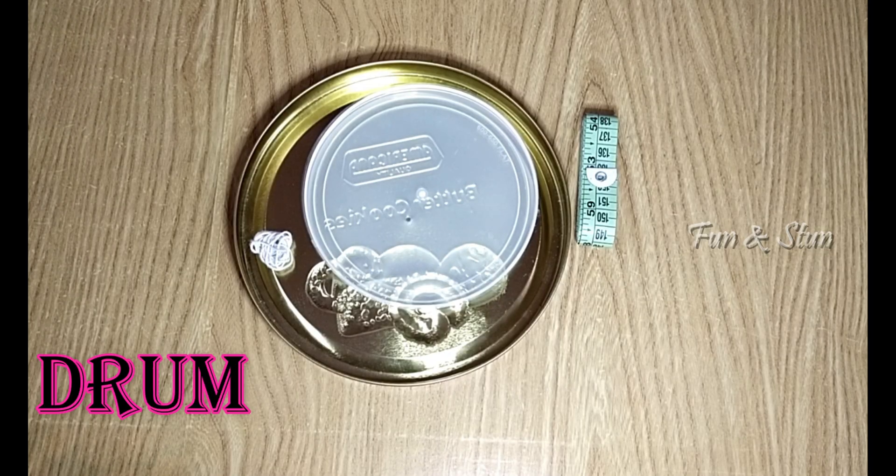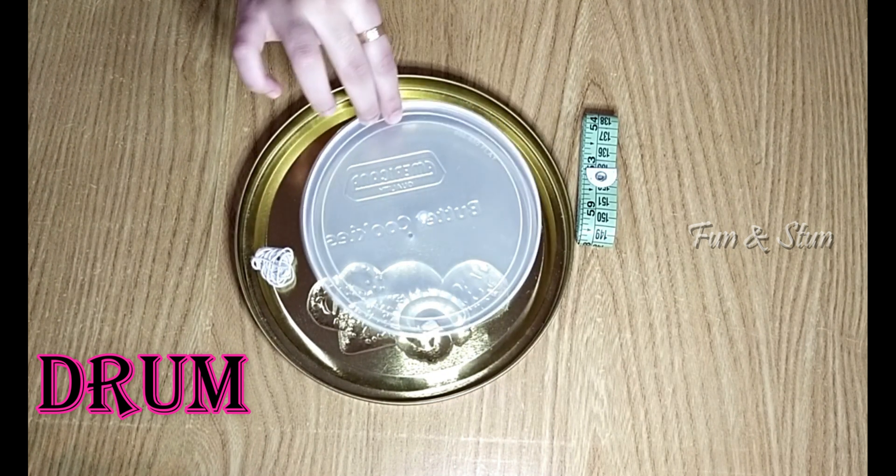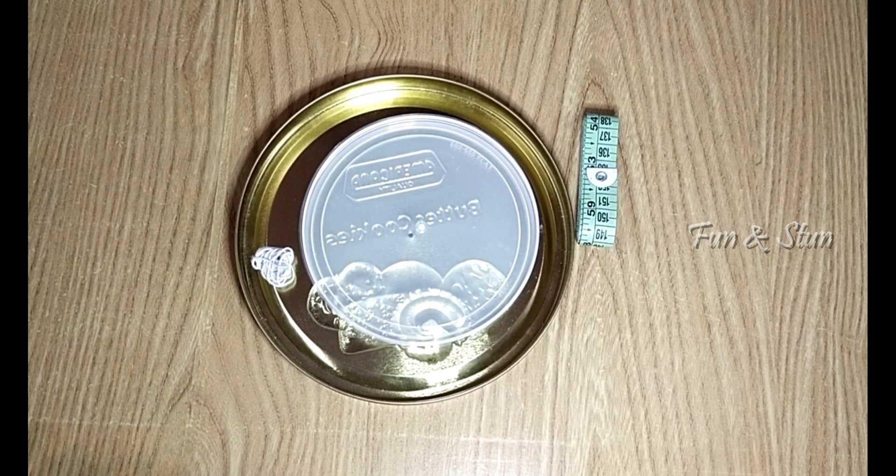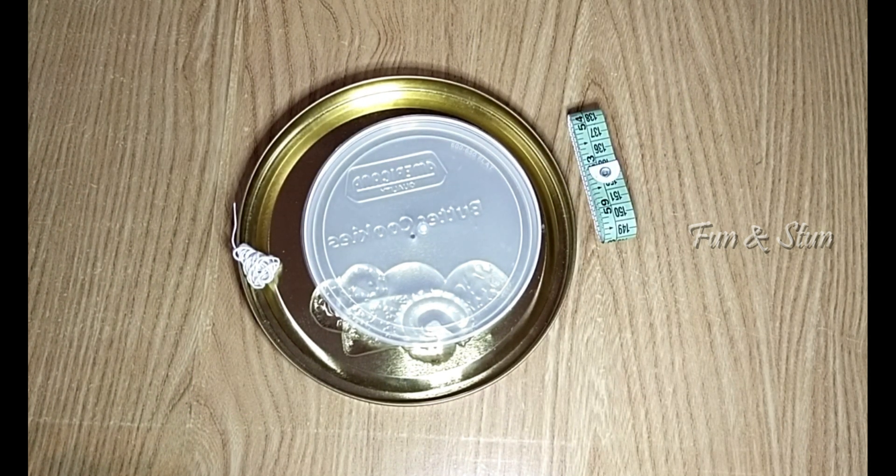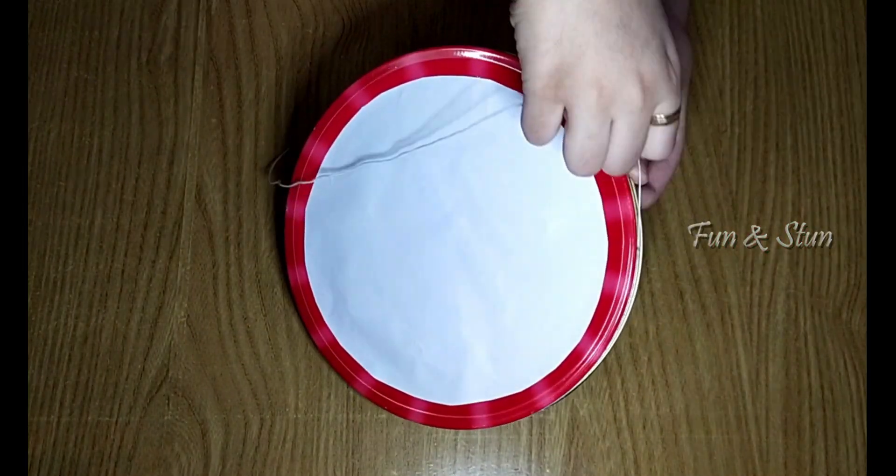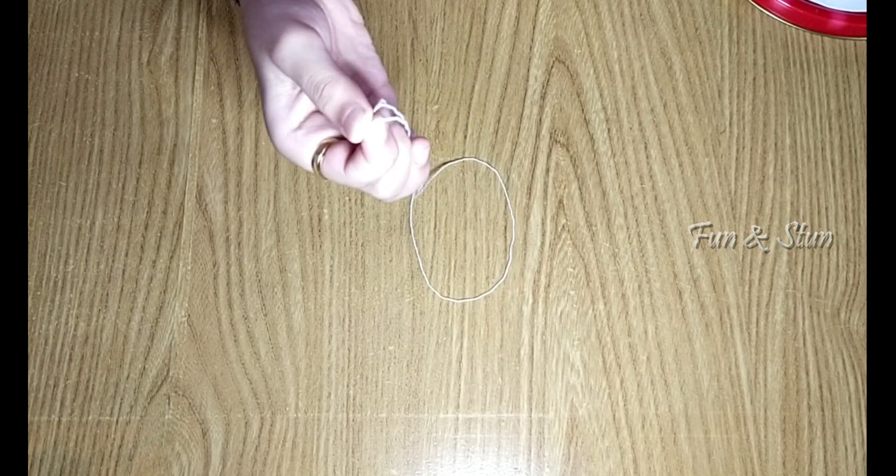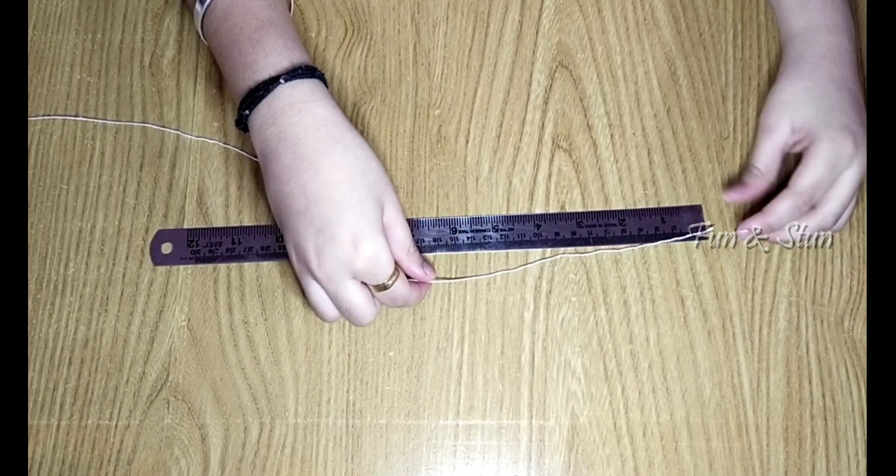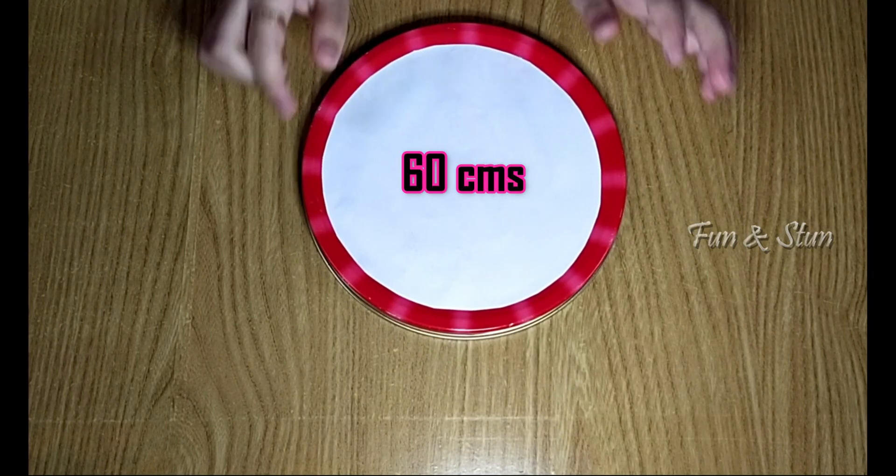First we'll start by making the drum of our Zoetrope. You can take any lid or even a cardboard for the base. We need thread or tape to measure the circumference of the base. Now let's measure the circumference of the lid with a thread. Roll the thread around the lid and mark the point and then measure it in the scale. The circumference of this lid is 60 centimeters.